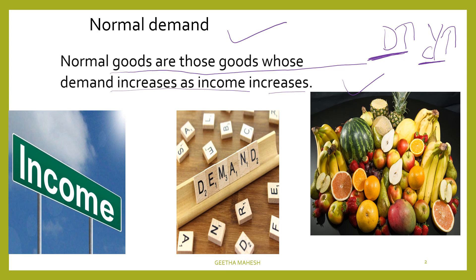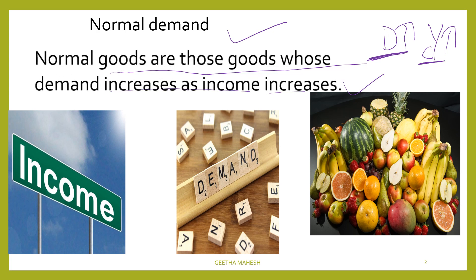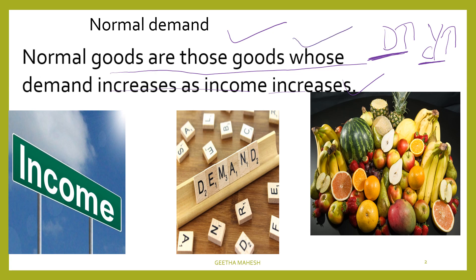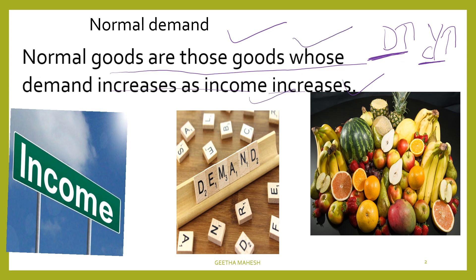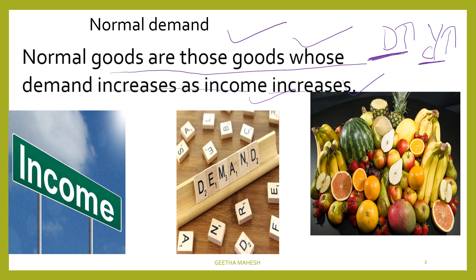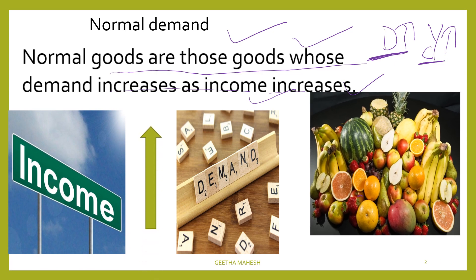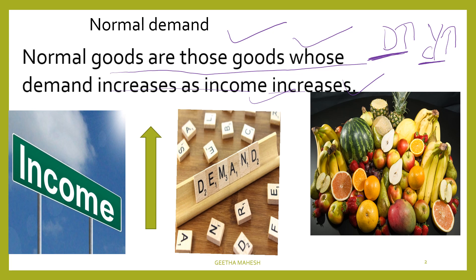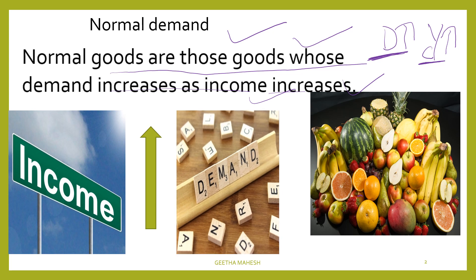You will notice that normal goods are those goods whose demand increases as income increases. If you are a good with normal goods — for example, fruits, vegetables, etc. — the demand increases.